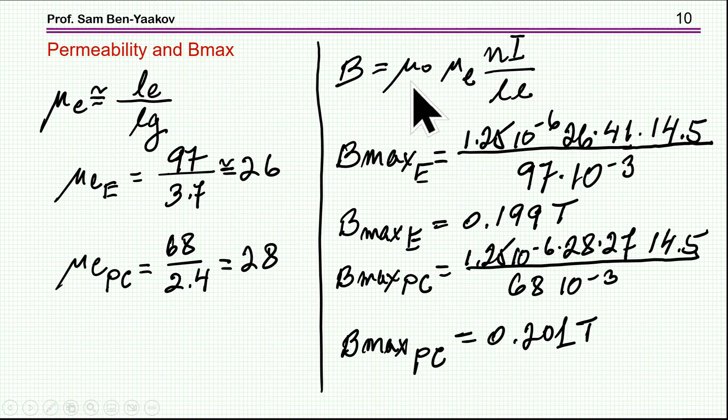Now, B is equal to μ times H, magnetic field, H is NI over LE, so I can now calculate what will be the B max for each I max that I have specified. Of course, the difference is the number of turns, and the LE and μE, they are different in the two designs. So, if I plug in the numbers, then I find that the B max for the E core is 0.199. Remember that we have specified B max to be 0.2, and for the pot core, it's 0.201. So, you see that this design brings in all the parameters to the right values, while filling the two winding windows per the packing coefficient that we have defined.